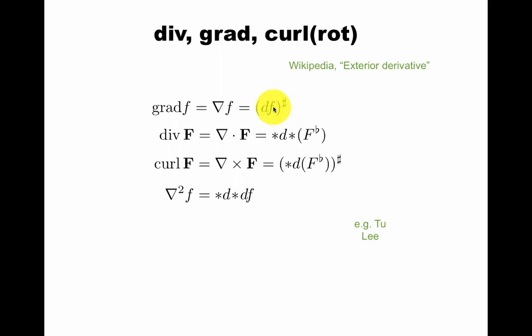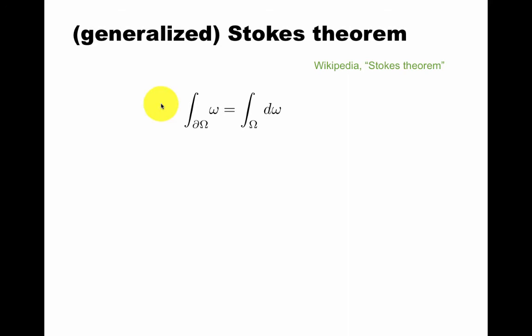This gives a powerful way to talk about standard constants from calculus using, for example, the musical isomorphism. This is sharp note. This is flat note. If you're not familiar with this, just look it up in these books or in this page. Exercise is to write these abstract things in terms of components, in terms of coordinates.